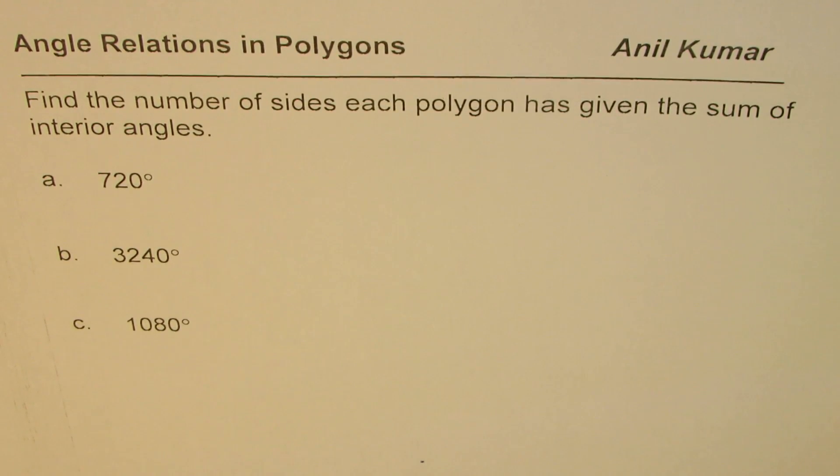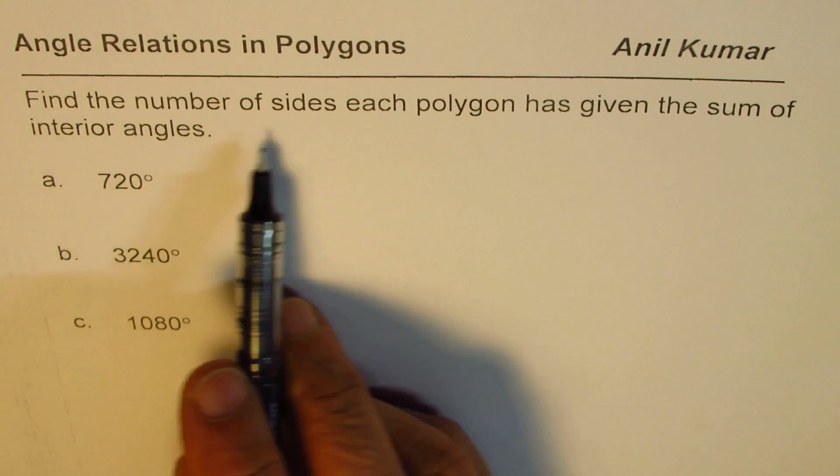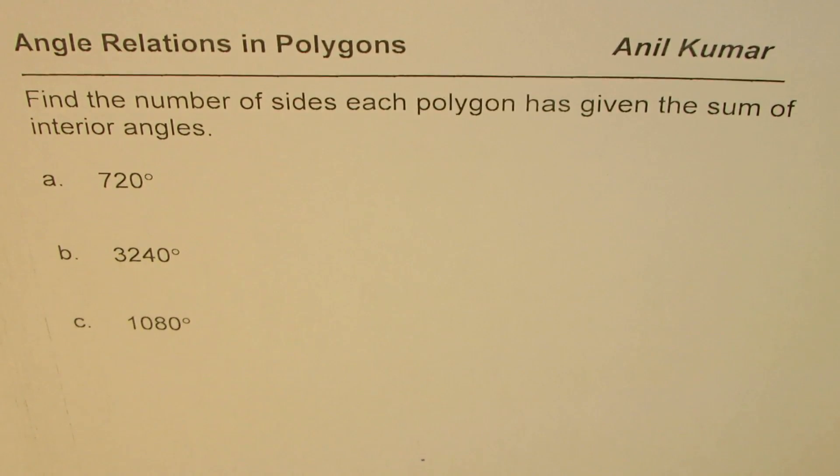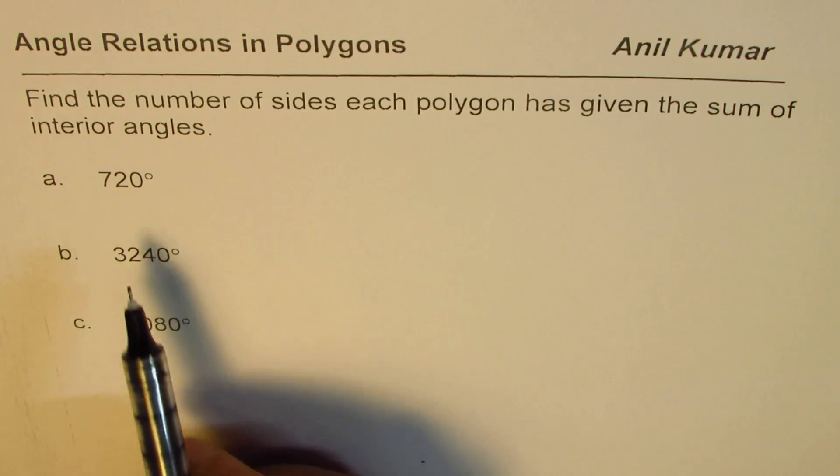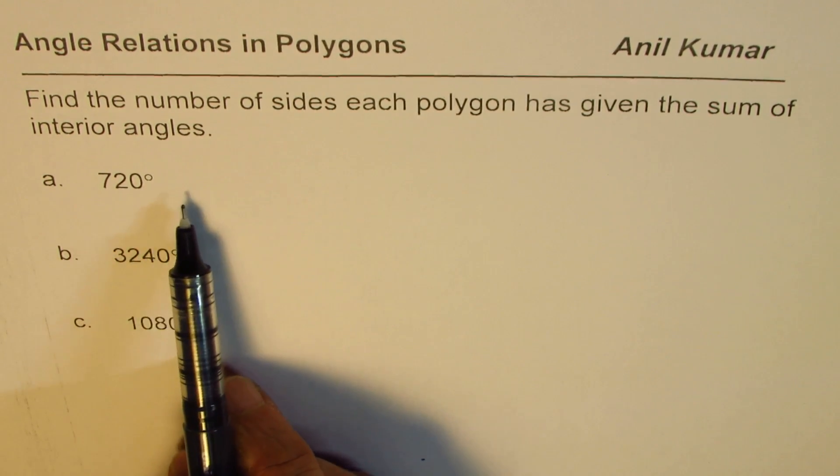Anil Kumar will discuss angle relations in polygons. The question here is: find the number of sides each polygon has given the sum of interior angles. If the interior angle sum is 720 degrees, we need to find how many sides...